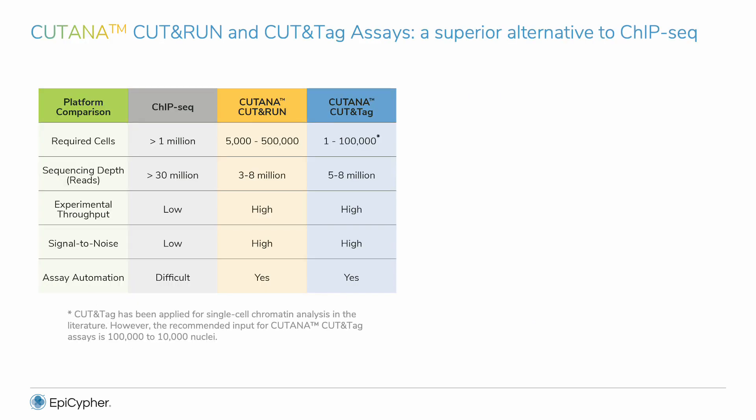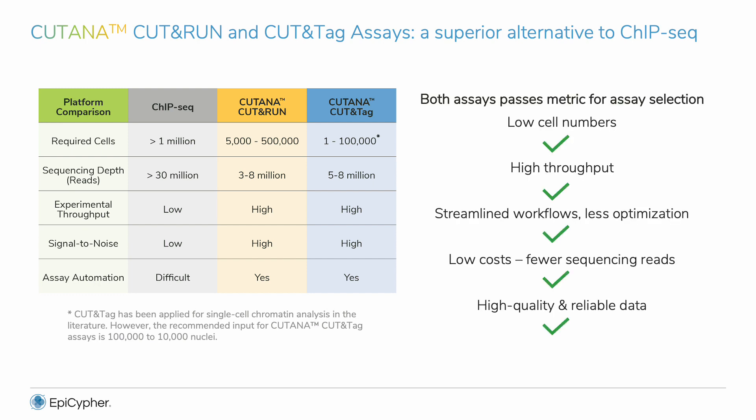To address these problems, EpiCypher offers Katana CUT&RUN and CUT&TAG assays for ultra-sensitive chromatin profiling. Our assays and user-friendly protocols pass each metric for assay selection. In side-by-side comparisons with ChIP-seq, CUT&RUN and CUT&TAG require fewer cells and have lower sequencing costs. Katana assays are also much faster — you can go from cells to sequencing in as few as two days. Furthermore, the data are greatly improved, with less background and more robust target signal.